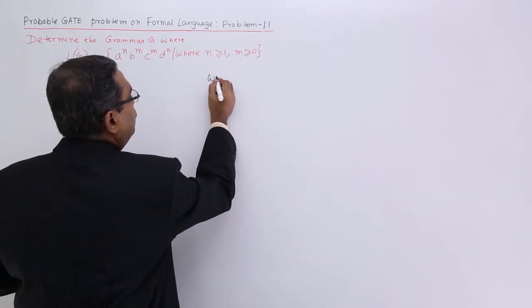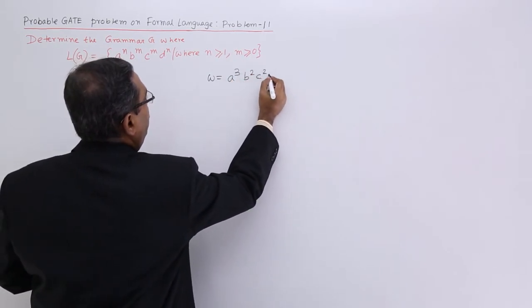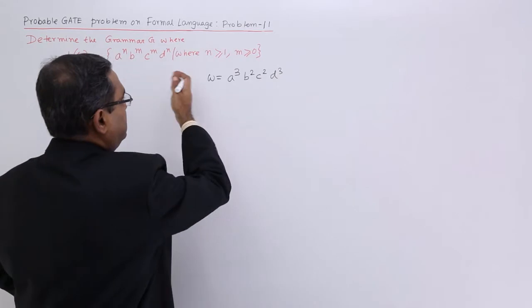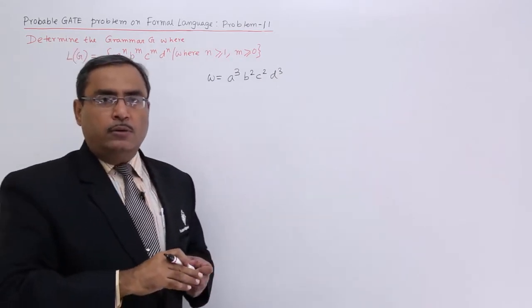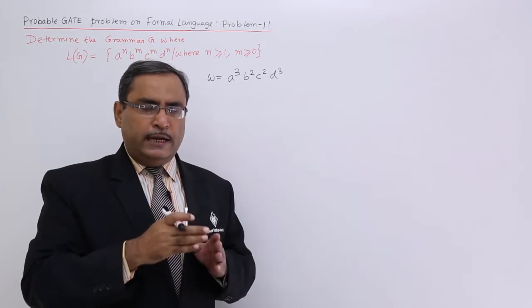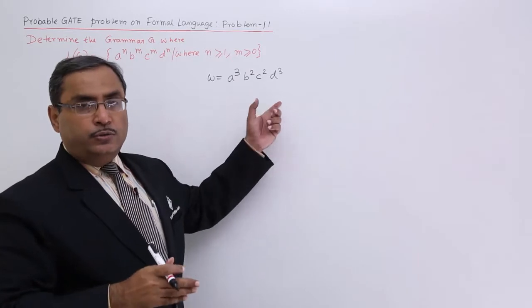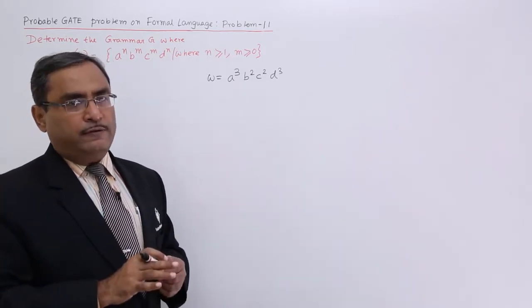If you consider say w equals say a cube b square c square d cube. Yes, that is following from the grammar. Why? Because a and d are of same number and b and c they are of same number. So that is why they are being written in this way. So let us write the production rule at first.